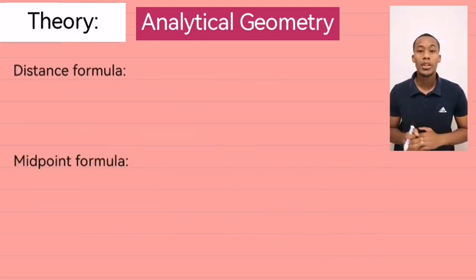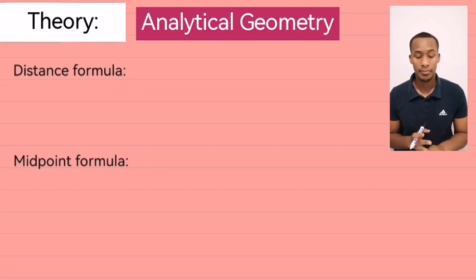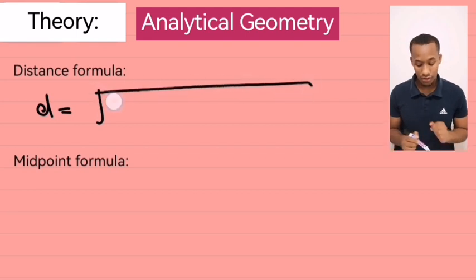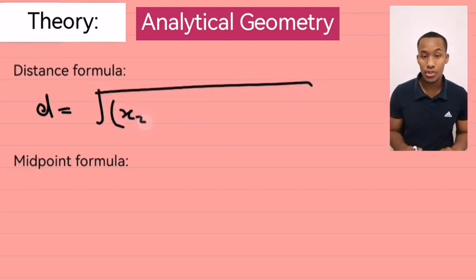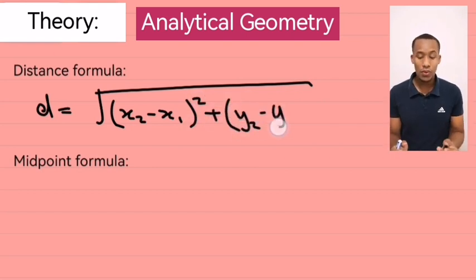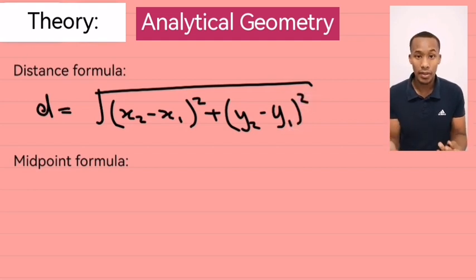Moving on. We now come to the distance formula and the midpoint formula. So, the distance formula is d equals the square root of x2 minus x1 squared plus y2 minus y1 squared. Now, as you can see, this formula resembles Pythagoras a lot. And that's because it's derived from Pythagoras.